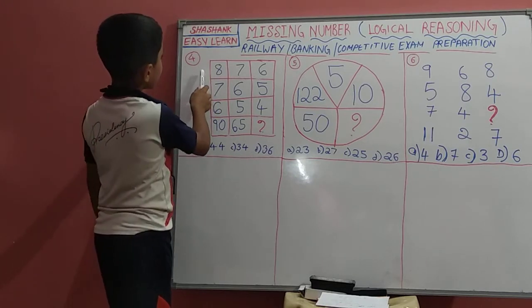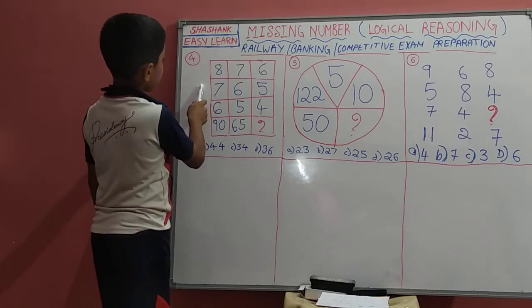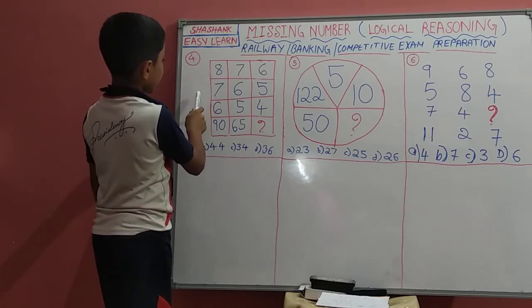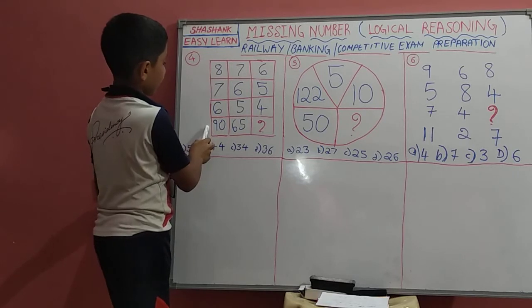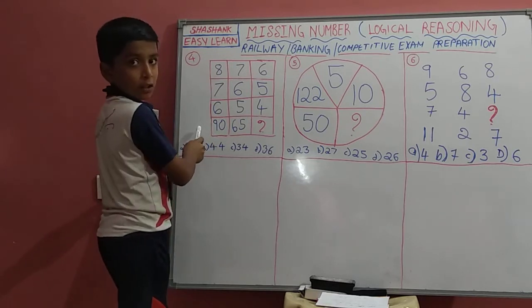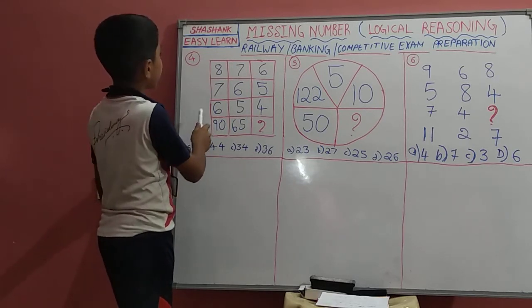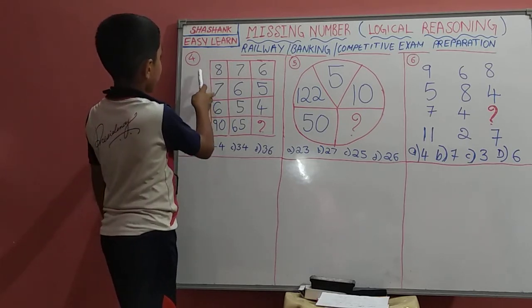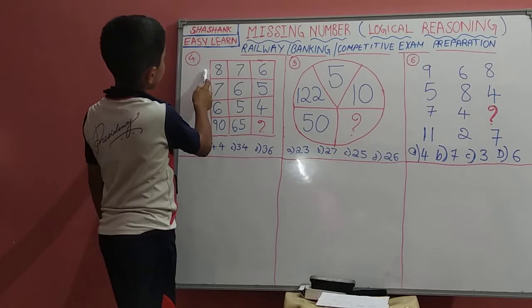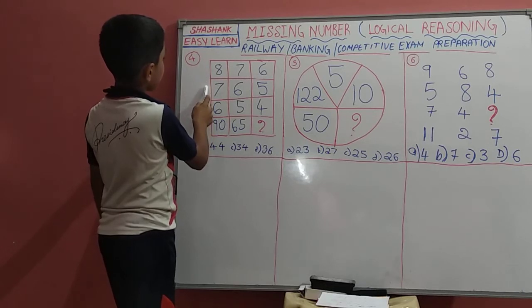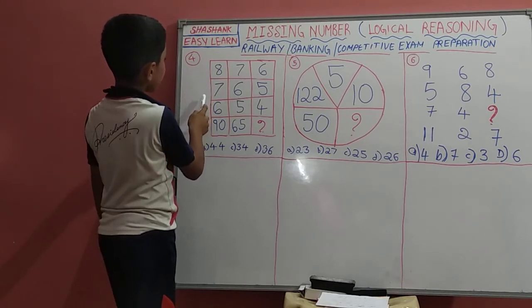Let's try adding. We are not getting the right answer just by adding. Let's try adding and multiplying. 8 plus 7 is 15.